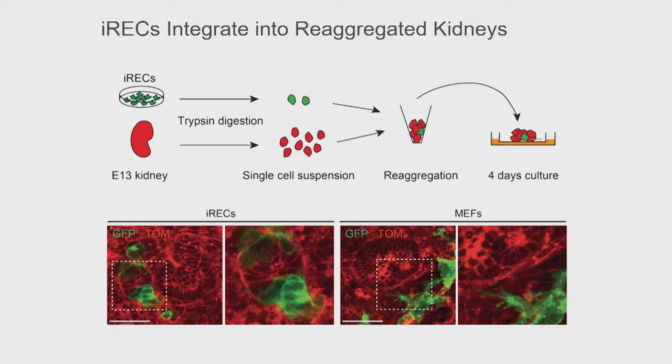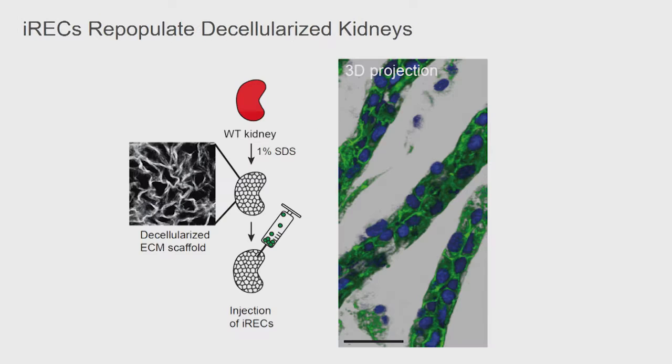But are these cells able to form tubules all by themselves? We used the recellularization technique introduced earlier: we completely washed out these adult kidneys of all living cells, leaving only the extracellular matrix — just an empty kidney scaffold. There we introduced our IRECs again, and they formed these long tubular structures like they would in a real normal kidney.